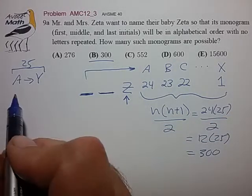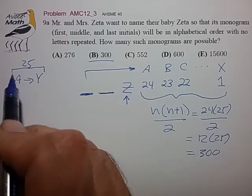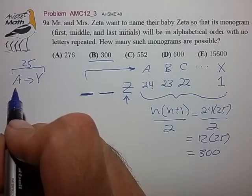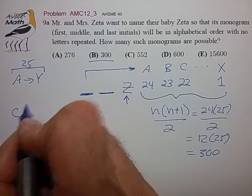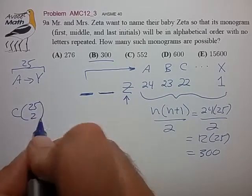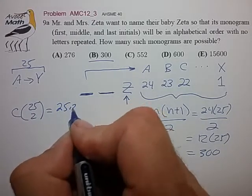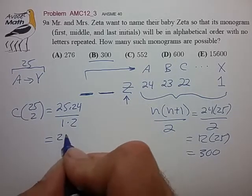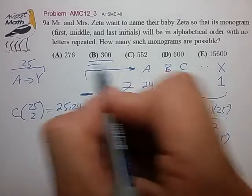So the question really comes down to how many ways can we choose two distinct letters from a set of 25 possible letters, and that is essentially a simple combinatorics problem. The number of ways we can choose two distinct letters from a total set of 25 possible letters is simply C 25 choose 2, which from our combinatorics formula is given by 25 times 24 divided by 2 factorial 1 times 2, which equals 25 times 12, which again equals 300, which agrees with our choice B.